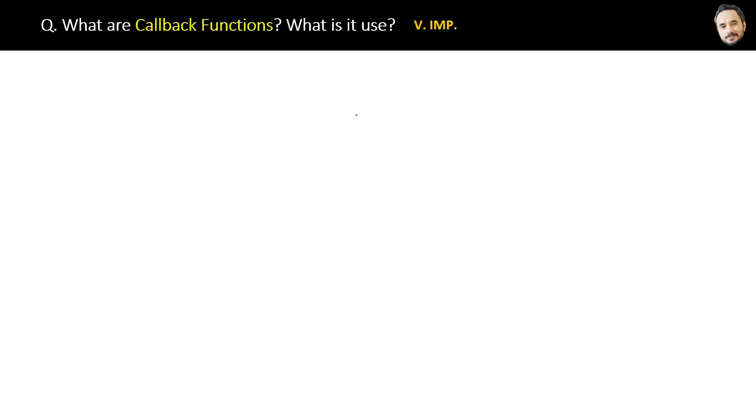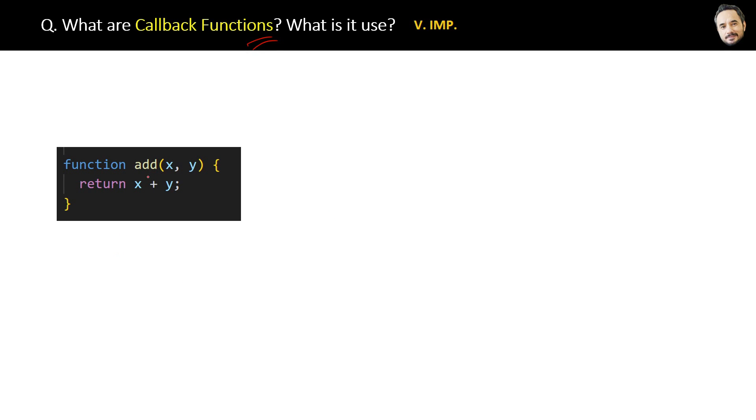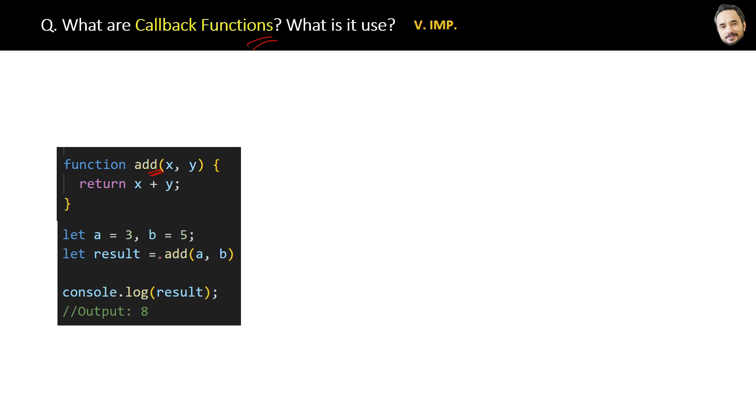What are callback functions? What is its use? A very important question. Here is the code - you can see we have a simple normal function add here. We can call this add function by passing two parameters and getting the result in the result variable.